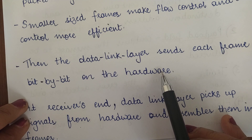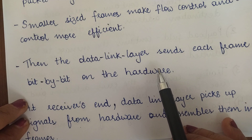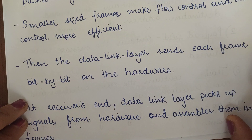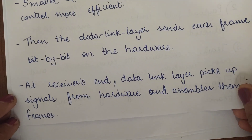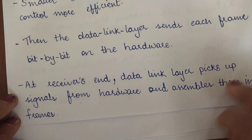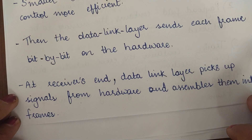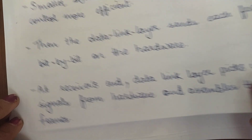The data link layer sends each frame bit by bit on the hardware. Below the physical layer is the actual hardware through which data is being transmitted. At the receiver's end, the data link layer picks up the signals from the hardware and assembles them into frames again.